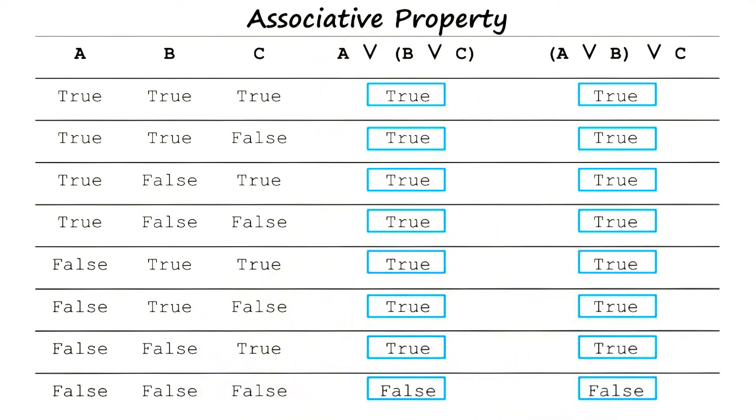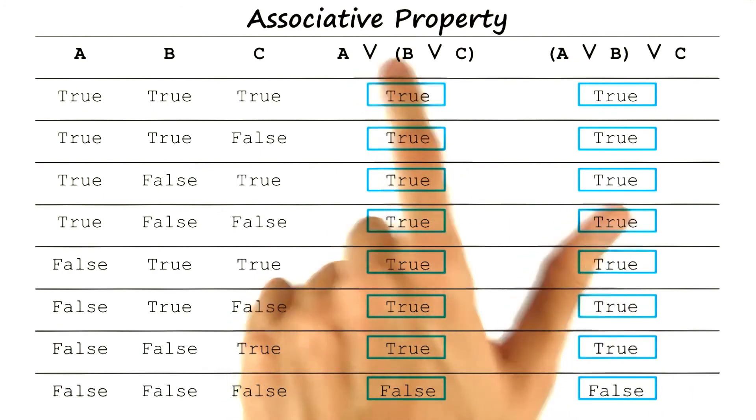Associative property works when it's both ors or both ands. Distributive property worked when they were a mixture of operators.